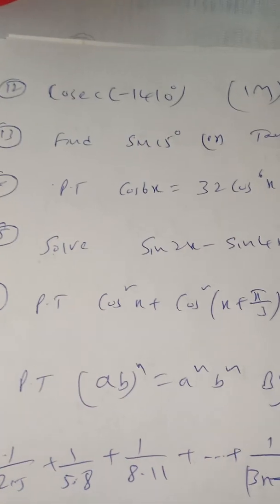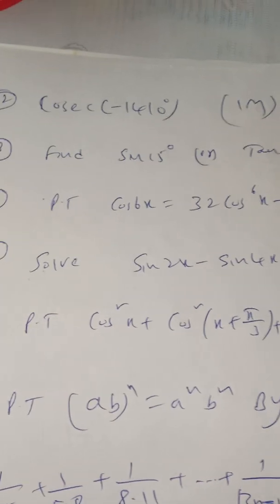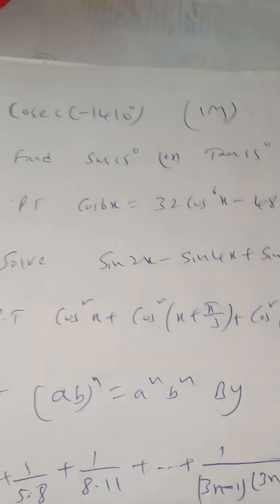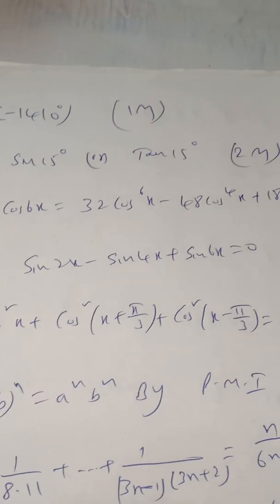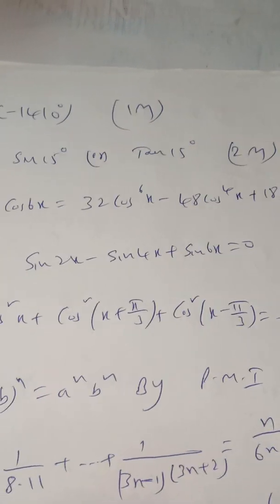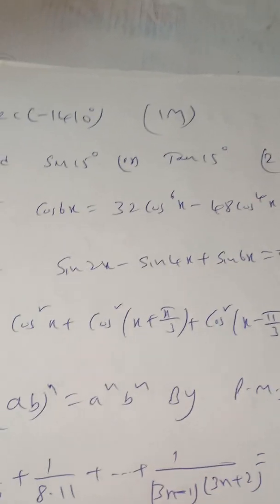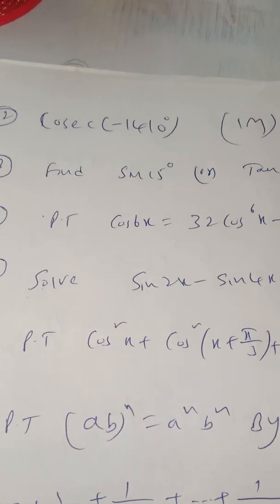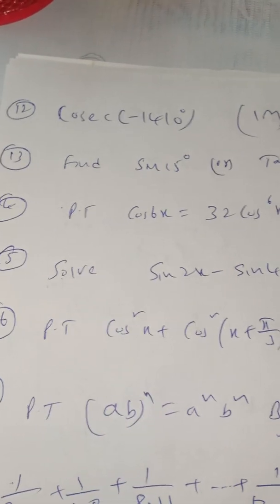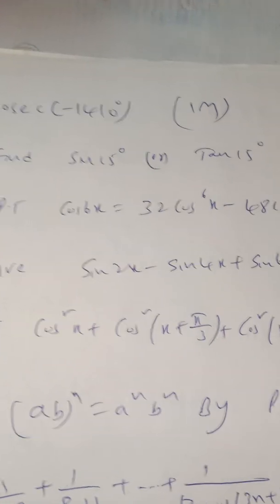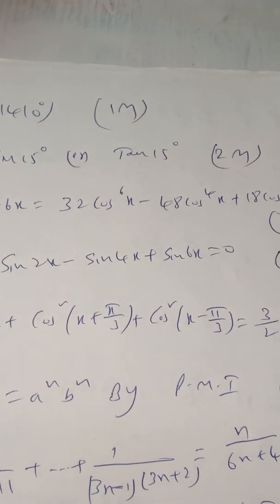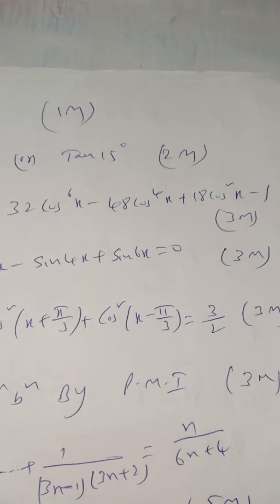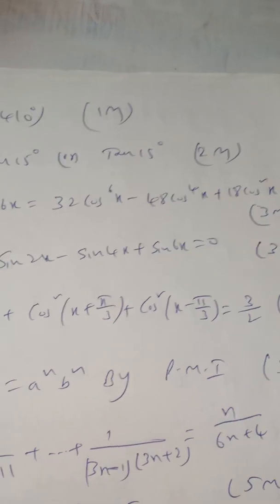Another important trigonometric equations question for 3 marks: solve sin 2x − sin 4x + sin 6x = 0. This is very very important from an exam point of view in first PUC.